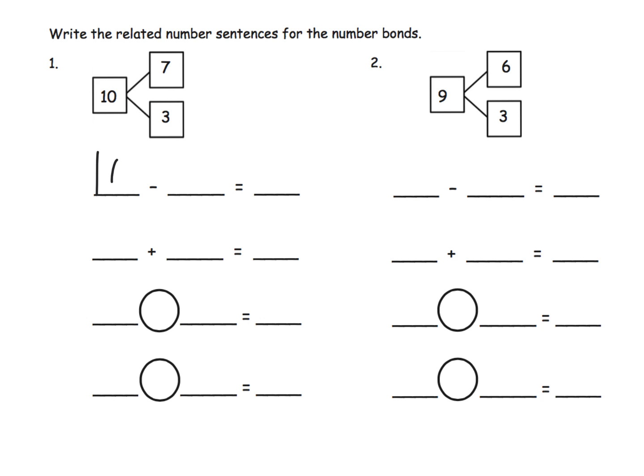In this case we're saying okay, we're going to start with 10 minus. Now of course we have a choice, we can either choose 7 or 3. The one thing we don't have a choice is that the 10 has to come first. It's the whole, so it needs to come first. So we could do 10 minus 7 is 3.